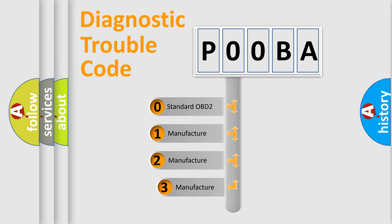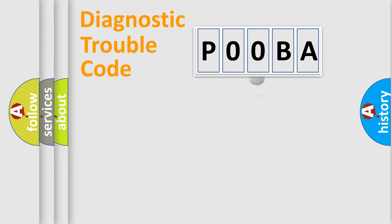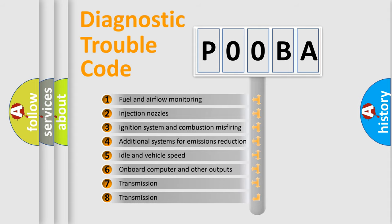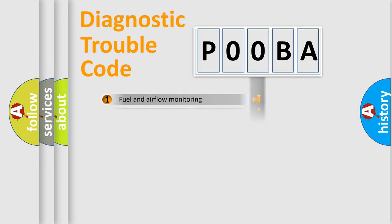If the second character is expressed as zero, it is a standardized error. In the case of numbers 1, 2, or 3, it is a manufacturer-specific error expression. The third character specifies a subset of errors.